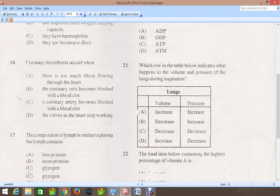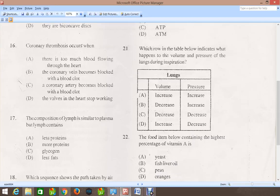Moving down to question 17, the composition of lymph is similar to plasma but lymph contains, and the correct answer for that is A, which says less proteins.